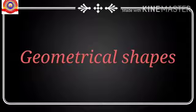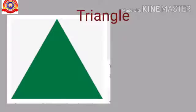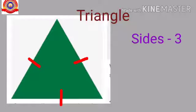First, we have to discuss about some geometrical shapes. First one: triangle. Look at the picture. How many sides are there in a triangle? Yes, one, two, three. So, a triangle has three sides.